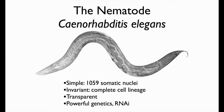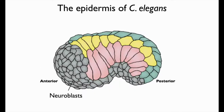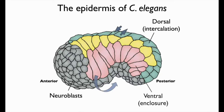We don't study the adult hermaphrodites — we study the jelly bean-shaped embryos you can see inside the worm. In particular, we study the embryonic epidermis, which has three basic cell types. The teal cells undergo an intercalation movement called dorsal intercalation — that's the focus of today's talk. The pink cells undergo ventral enclosure, migrating to encase the embryo in skin. The yellow cells engage in actomyosin-mediated contraction to squeeze the embryo into a worm shape.